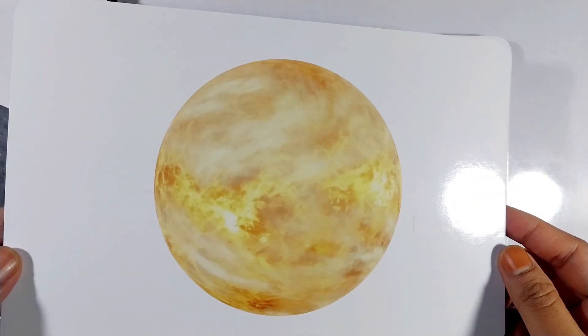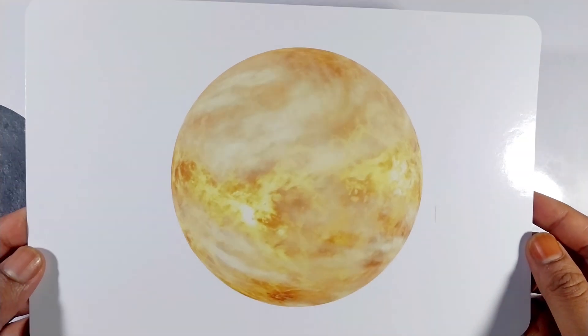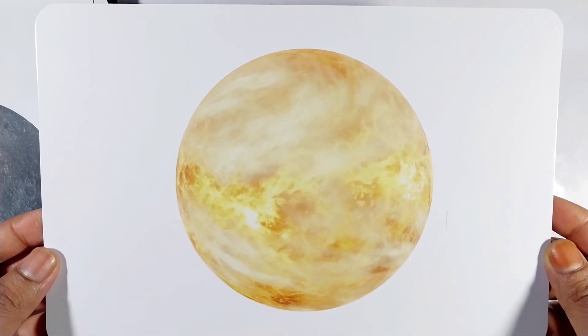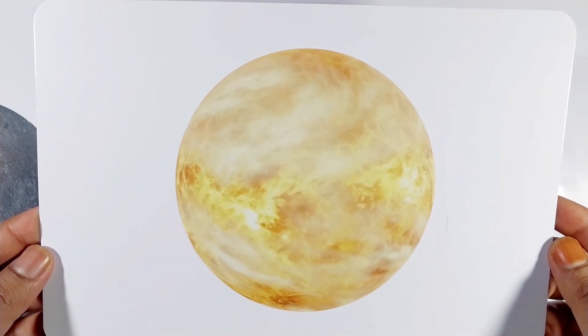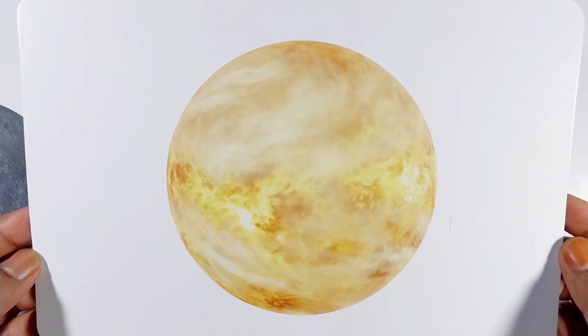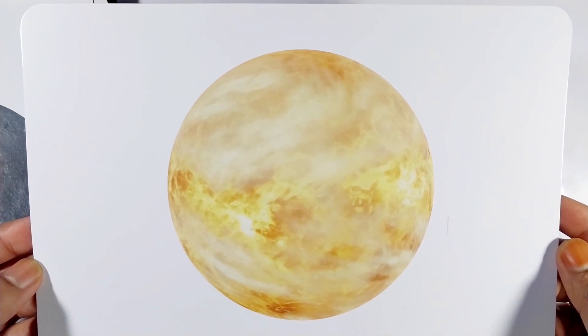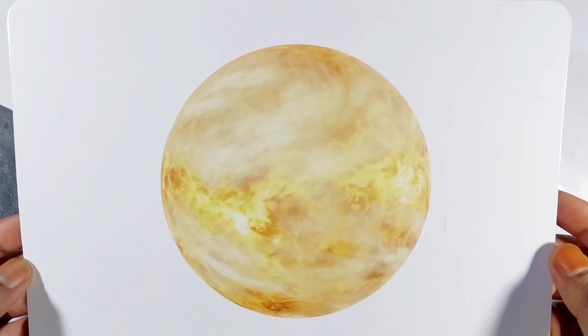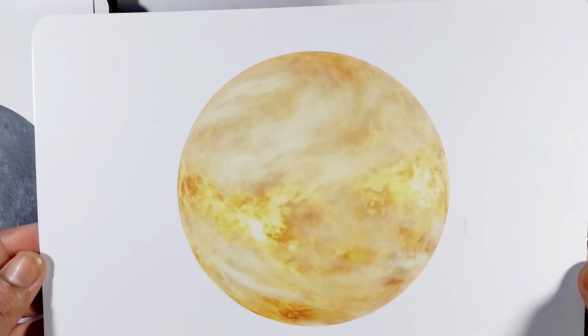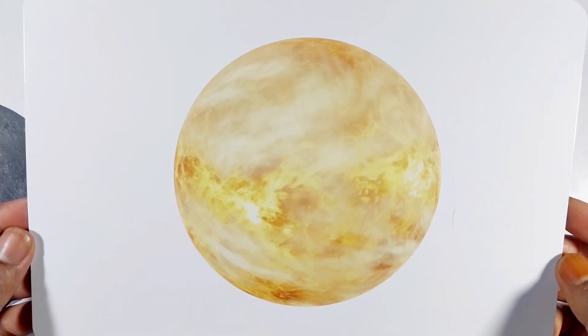Venus is known as Earth's sister planet because it's similar in size. It has a thick atmosphere made mostly of carbon dioxide, which traps heat and makes it the hottest planet in our solar system. Venus is also known as the morning star and evening star because it's often visible near sunrise or sunset.